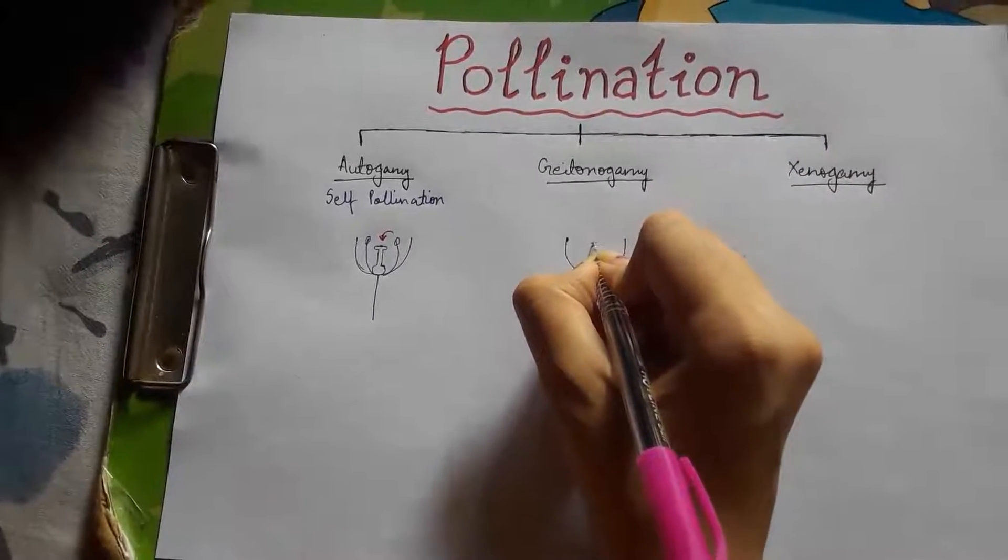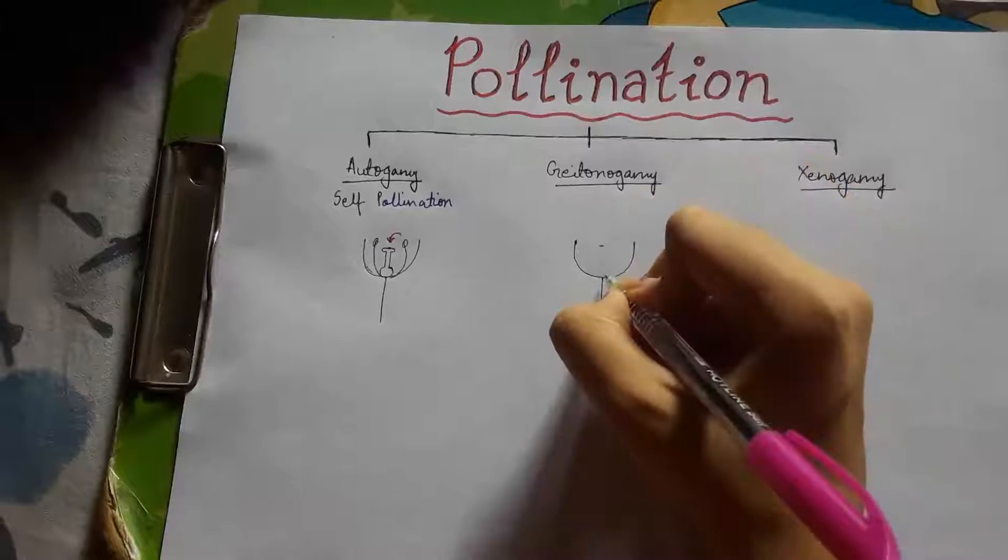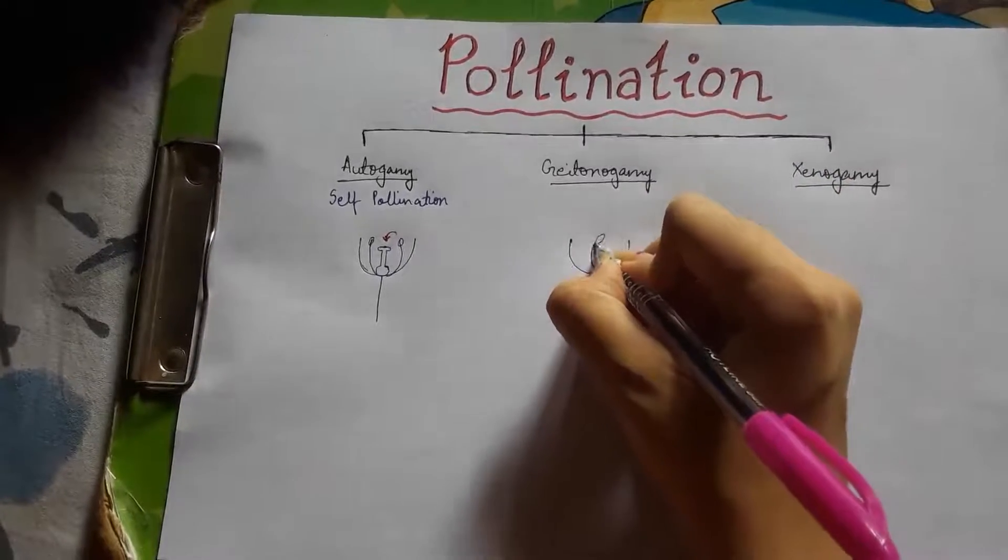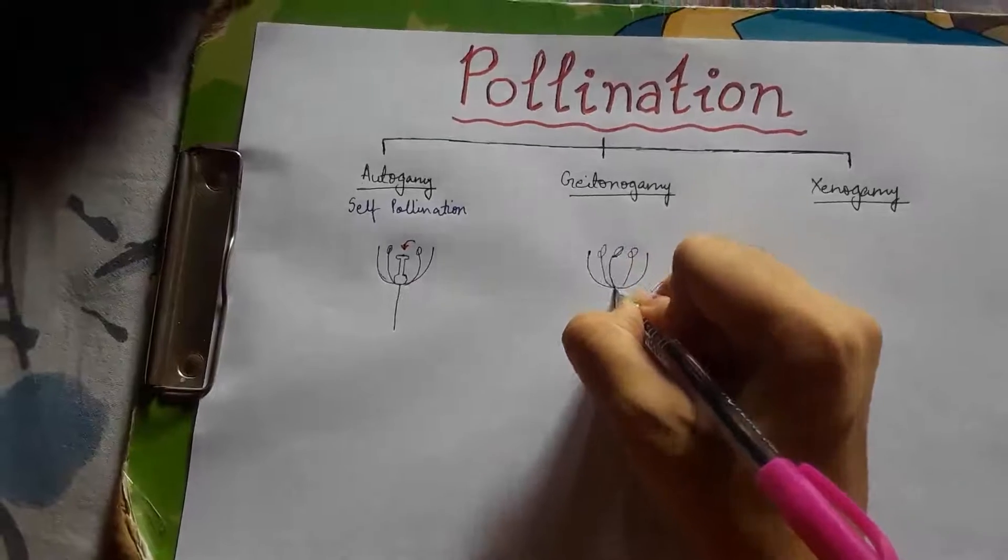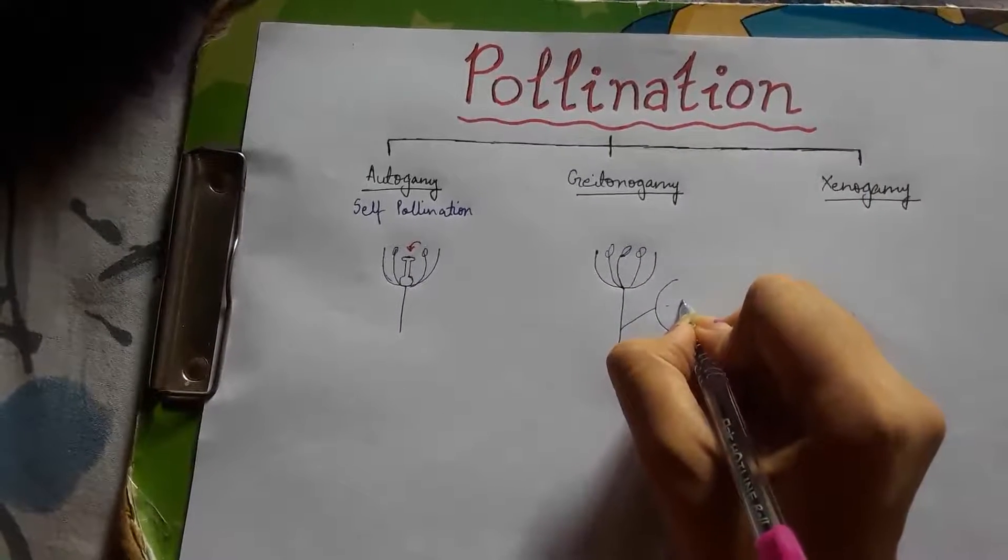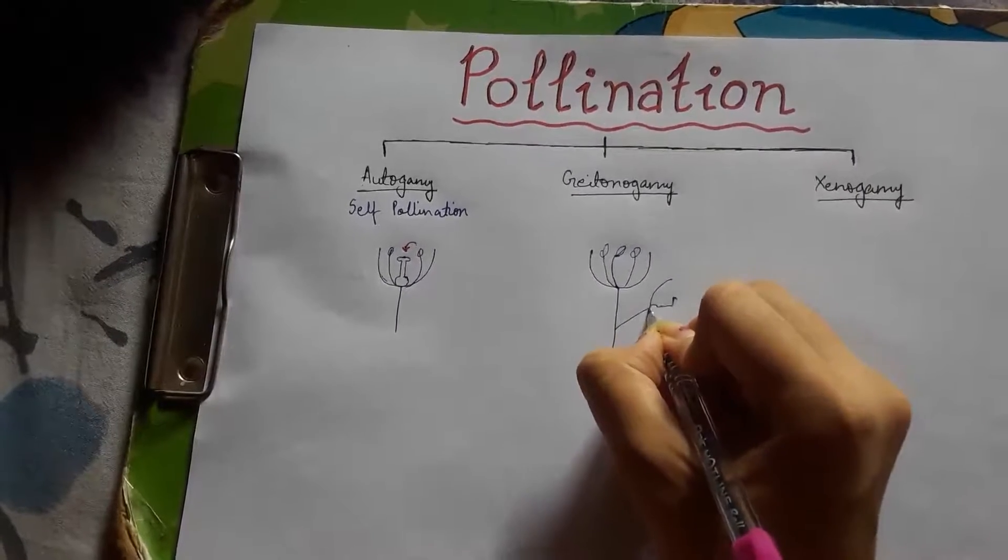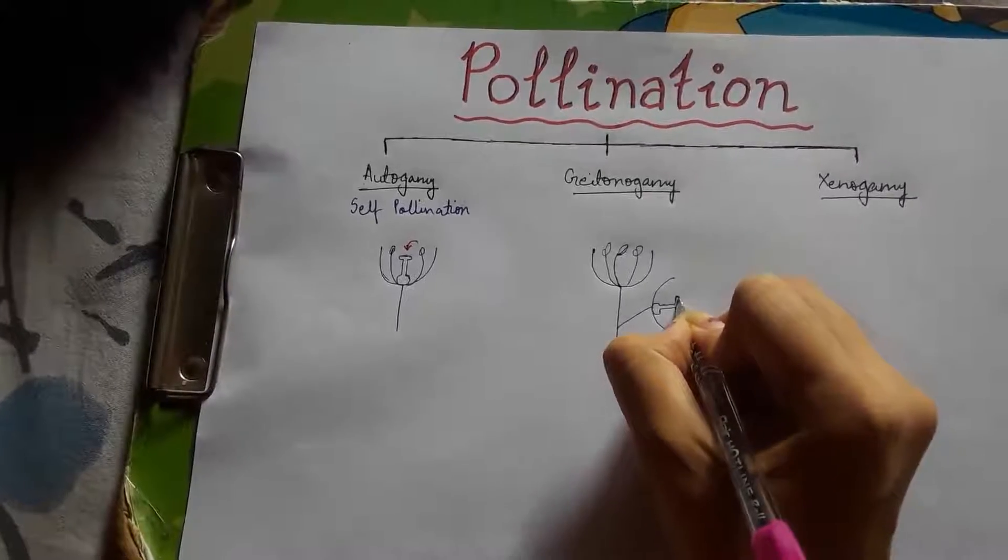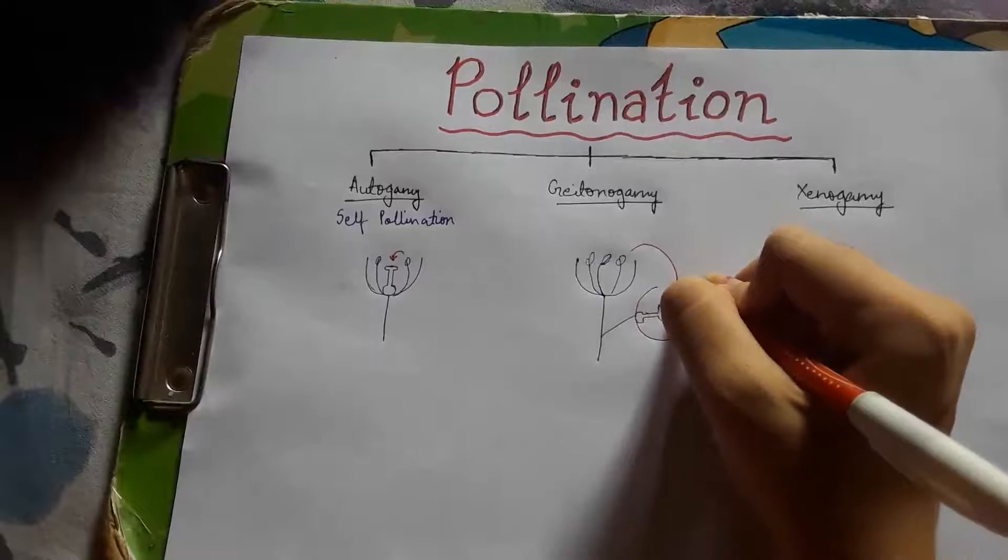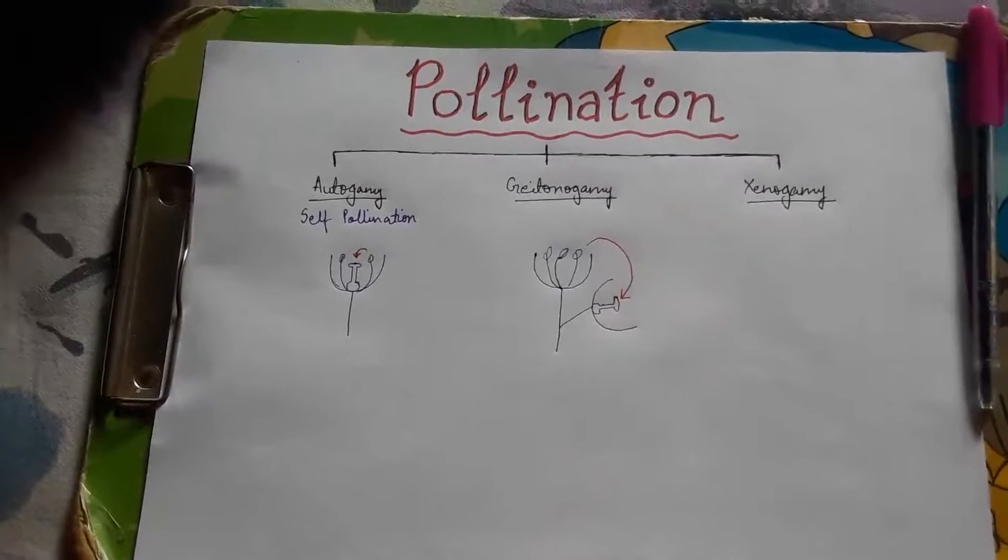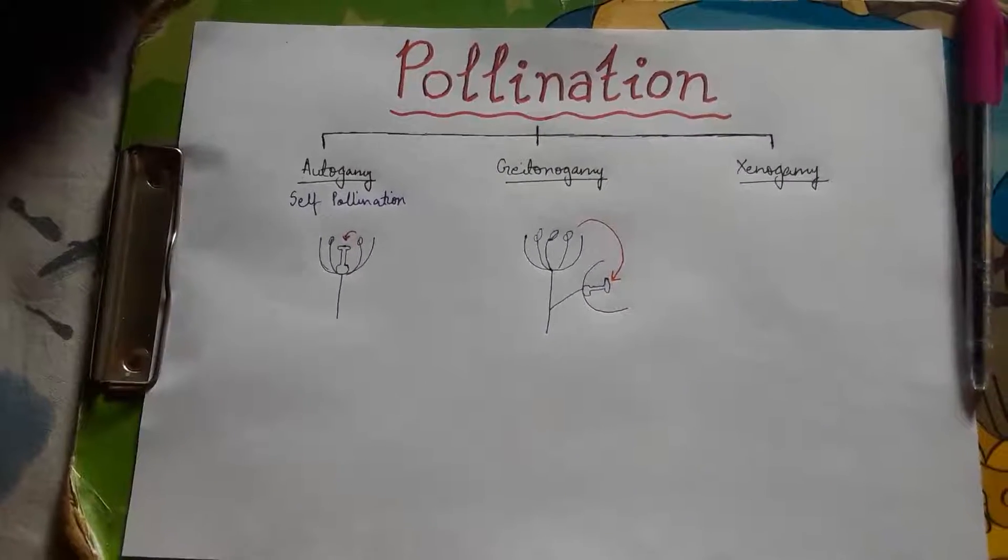Now here we have the anthers, and here we have the stigma, like this. So from the anther to the stigma of different flower on the same plant.